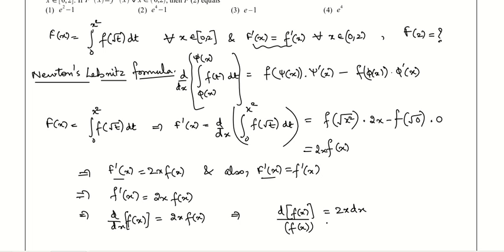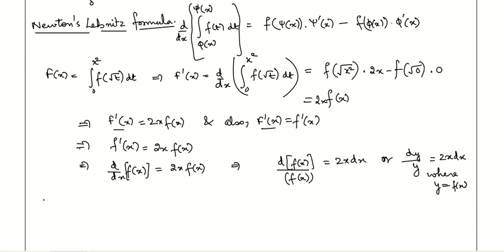This gives us a differential equation. We separate variables: d[f(x)] / f(x) = 2x dx. Substituting y = f(x) for ease of calculation, we get dy/y = 2x dx.